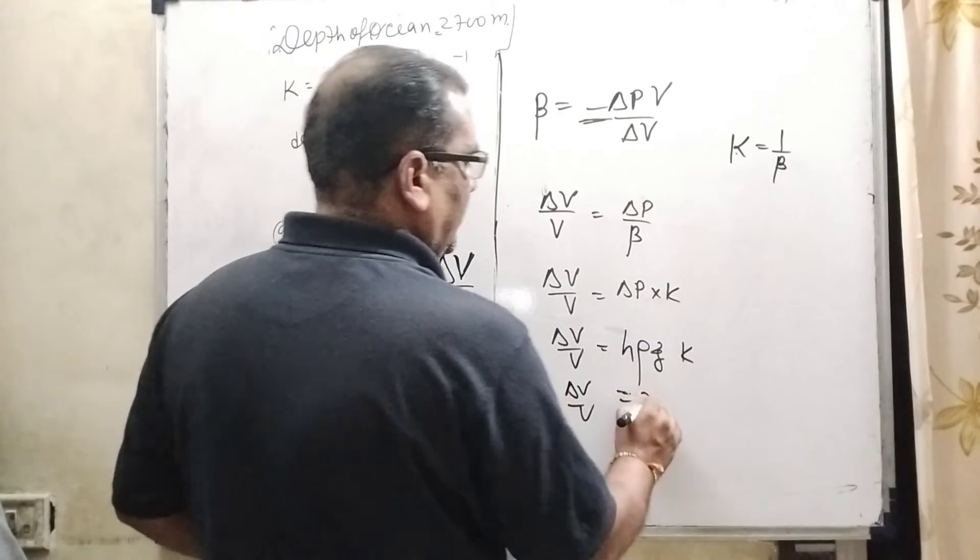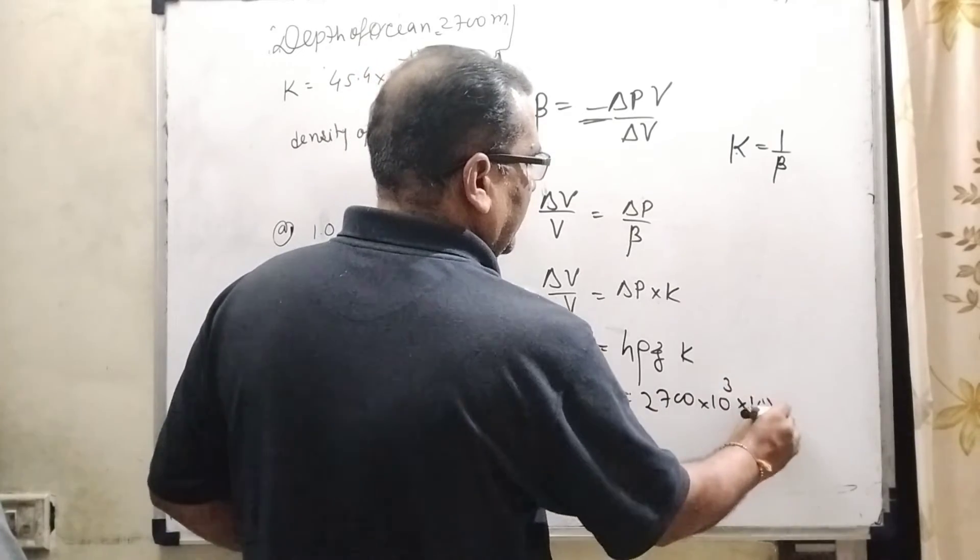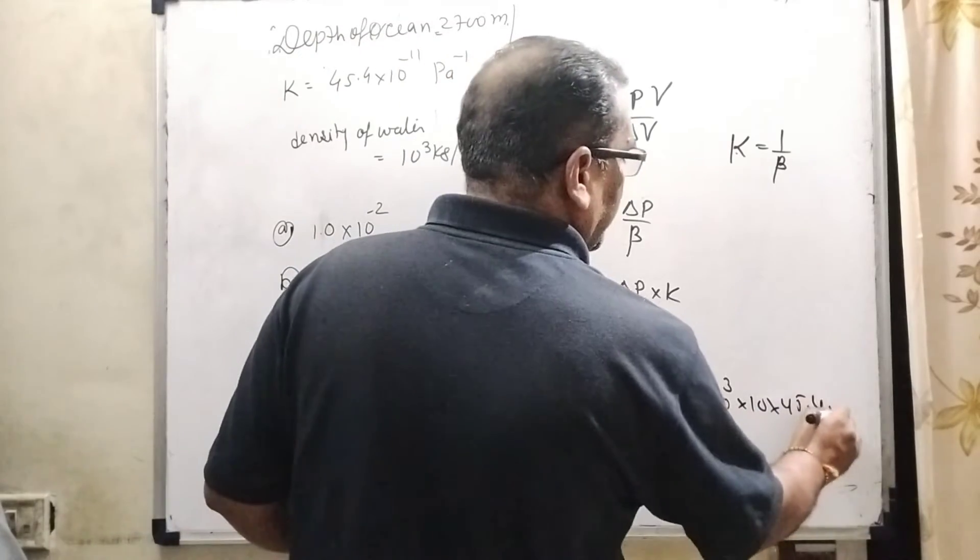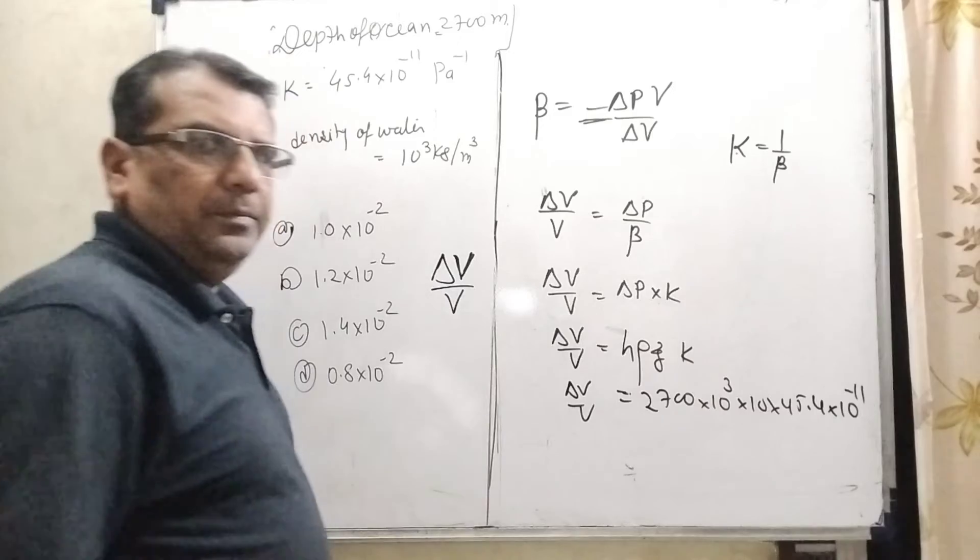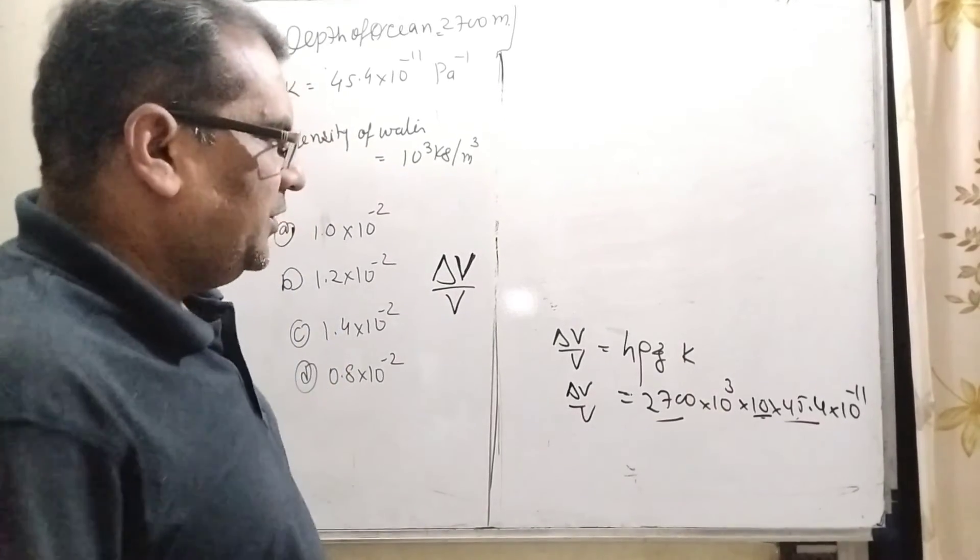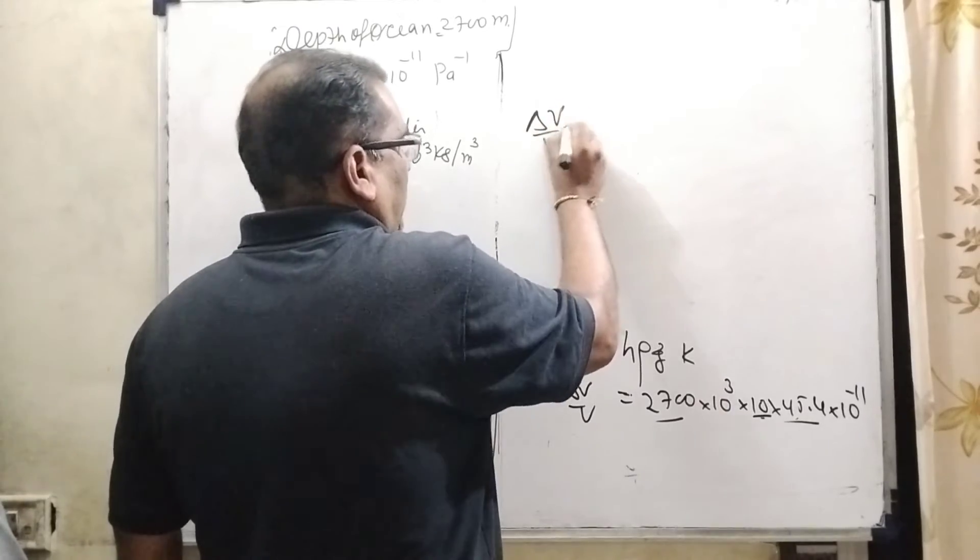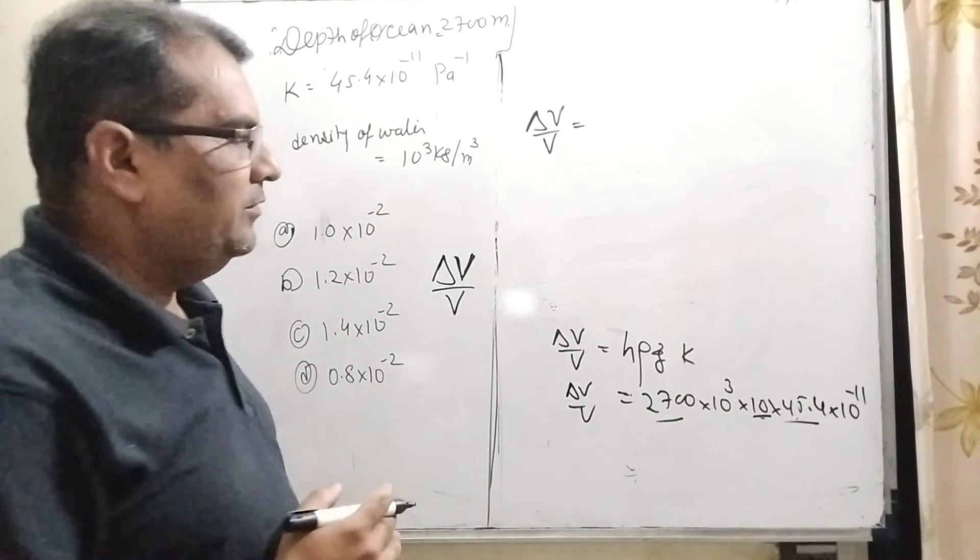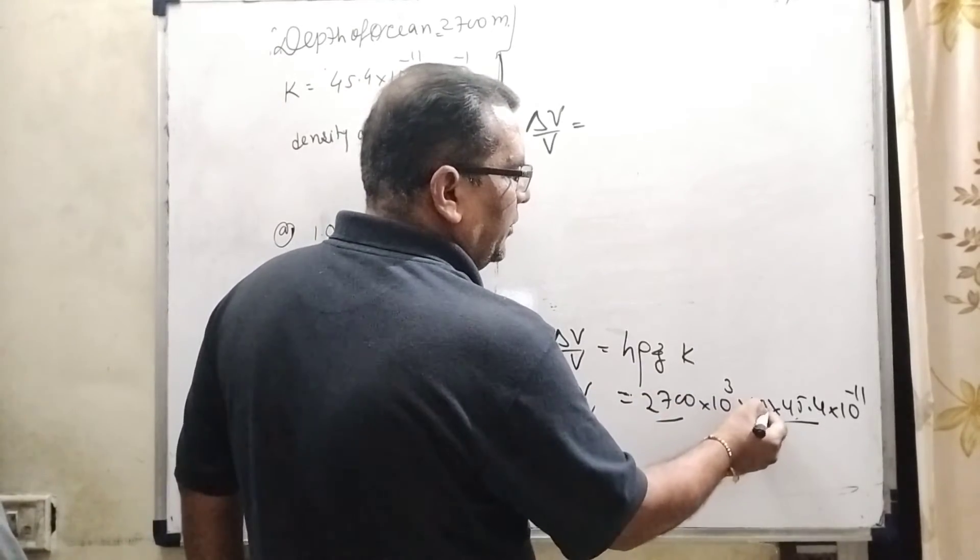Now substitute all these values. What is H? We have given 2700, 10^3 which is ρ, 10 for G, and 45.4 × 10^-11 for K. Now here it is very important how we can calculate. Here we know that in the place of 9.8, we have put here 10.